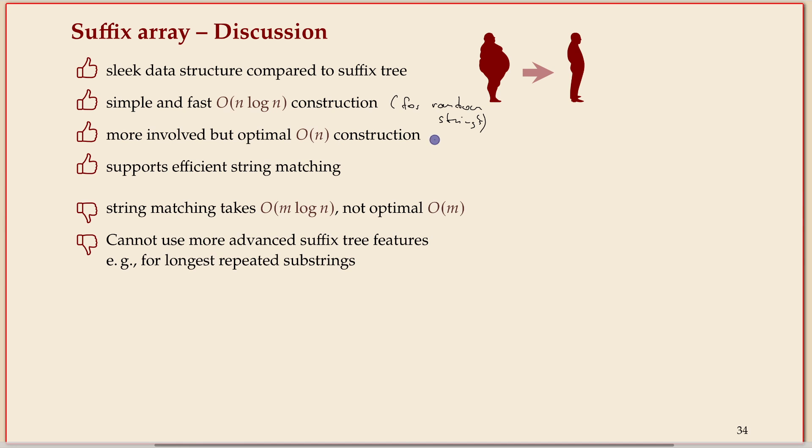So what can we do with the suffix array? We can construct it efficiently and we can do pattern matching. For example, we can use binary search to find the occurrences of a pattern in a long text. There's a few things that are not yet perfect. One of them is string matching takes m times log n time as I've shown you because of the binary search, whereas suffix trees could do it in time linear in the pattern length. And there's some things that we could do with suffix trees quite easily that don't seem possible right now, but that's something we'll quickly tackle after the break.